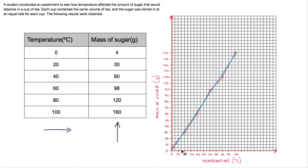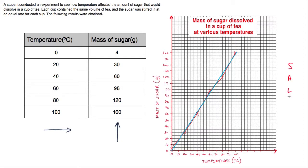As a recap, use the acronym SALT: S for Scale — make sure your graph is drawn to a suitable scale, not crammed into the bottom corner. A for Axes — draw your axes correctly. L for Label — label your axes and include the units. T for Title — add a title, such as 'Mass of sugar dissolved in a cup of tea at various temperatures.' For a line graph, remember to plot your points with crosses, join them with a ruler, and if required draw in a line of best fit.